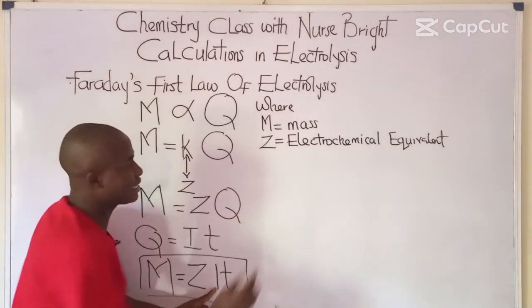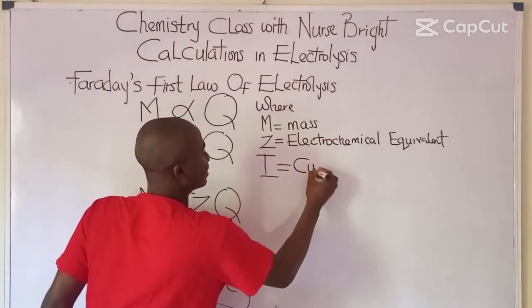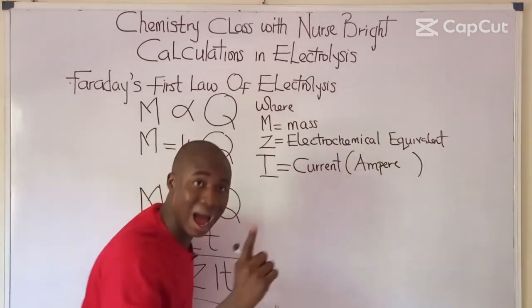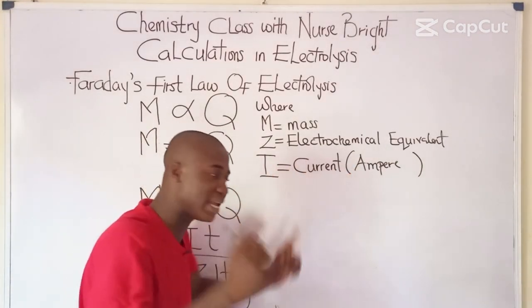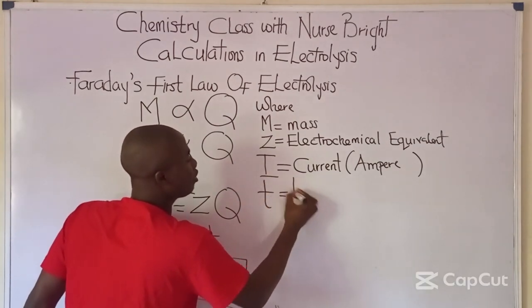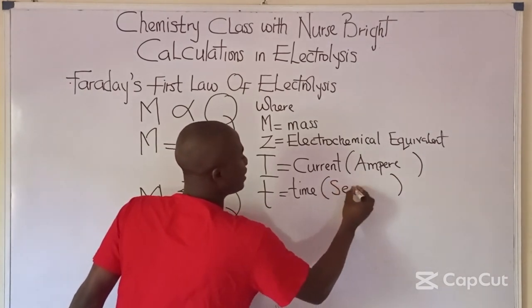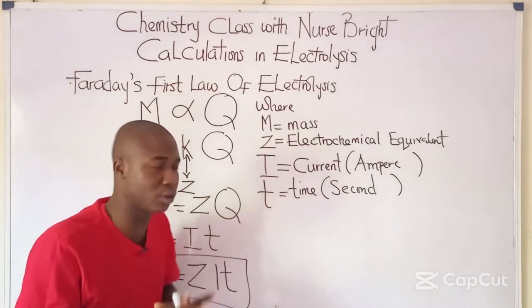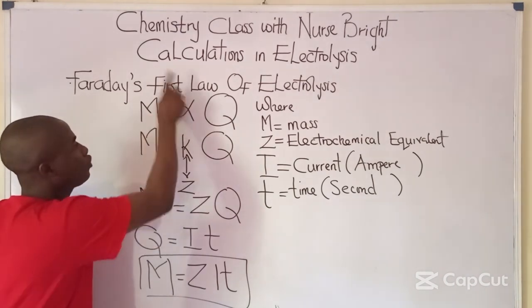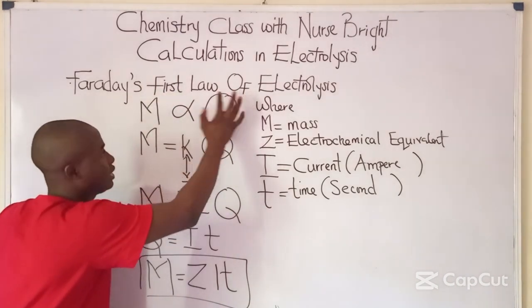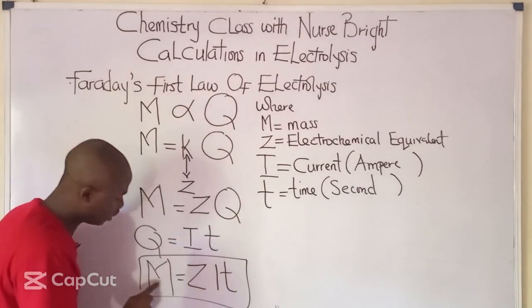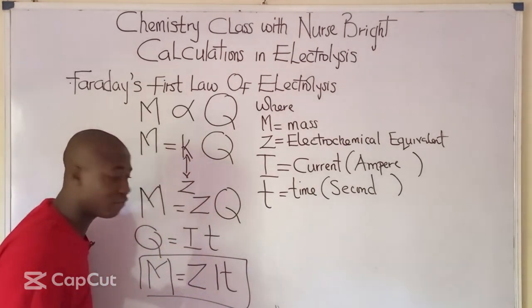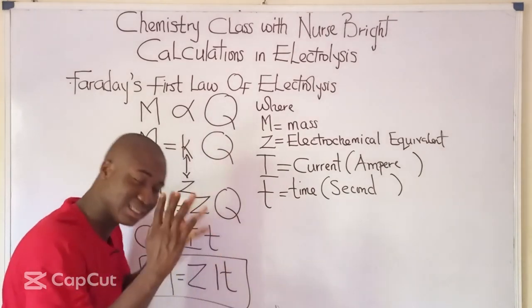Current I must be expressed in amperes, and time T must be expressed in seconds. So the formula M = ZIT must be noted: M is mass, Z is electrochemical equivalent, I is current in amperes, and T is time in seconds.